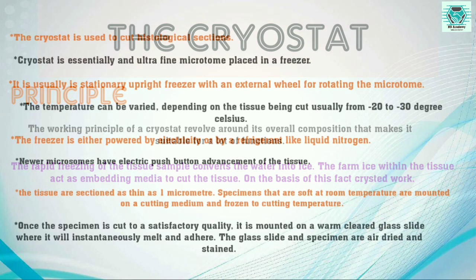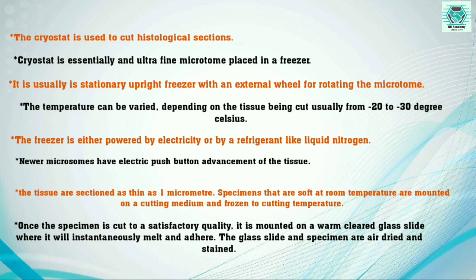Moving to the features of a cryostat: it is used to cut histological sections and is essentially an ultrafine microtome placed in a freezer. It is usually a stationary upright freezer with an external wheel for rotating the microtome. The temperature can be varied depending on the tissue being cut. This freezer is either powered by electricity or by a refrigerant like liquid nitrogen. Newer microtomes have electric push-button advancement of the tissue.